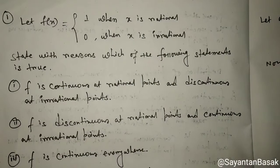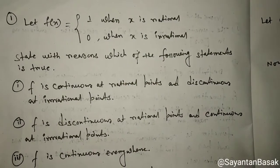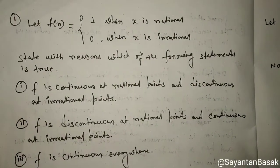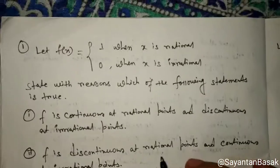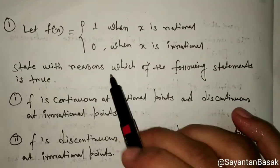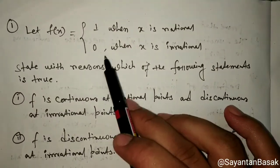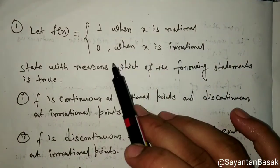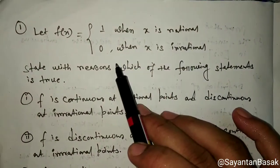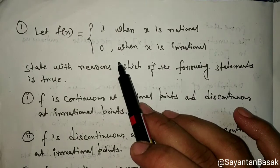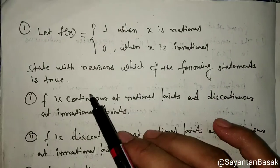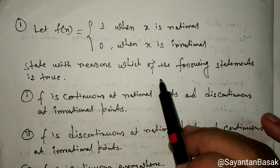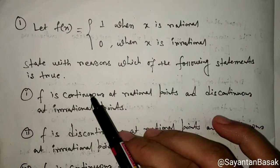Hello students, today I am continuing to talk about the right problem. Let f(x) equals 1 when x is rational and f(x) equals 0 when x is irrational. State with reasons which of the following statements is true.